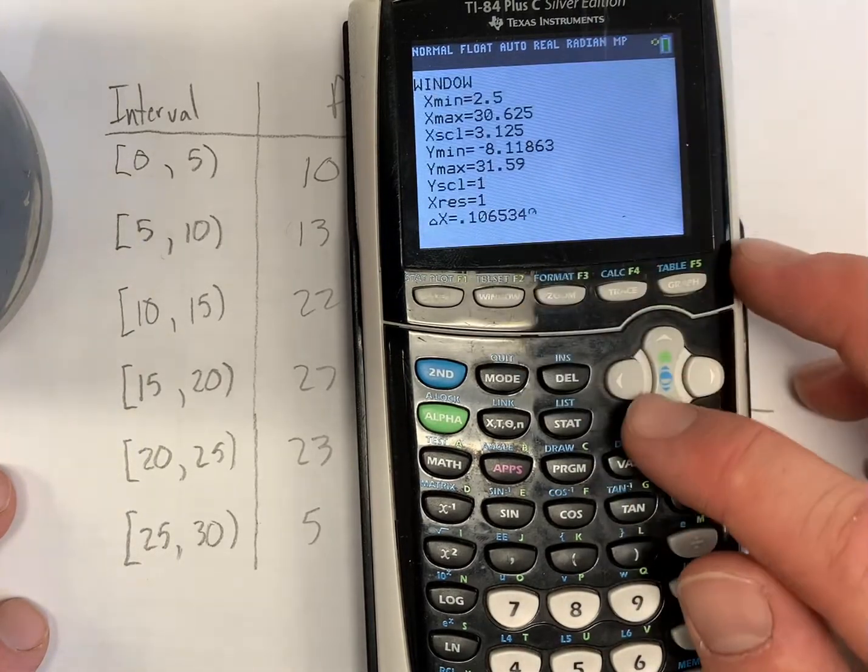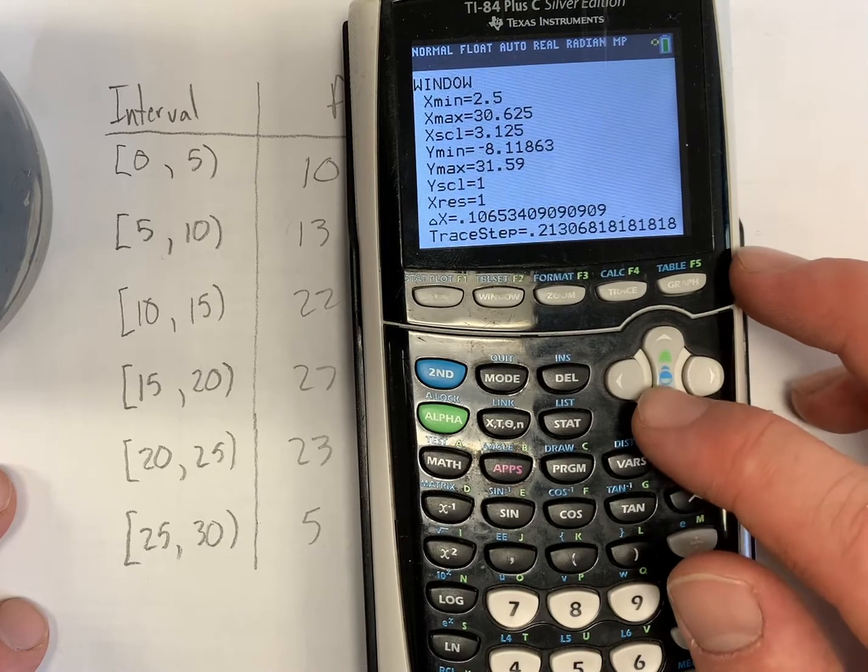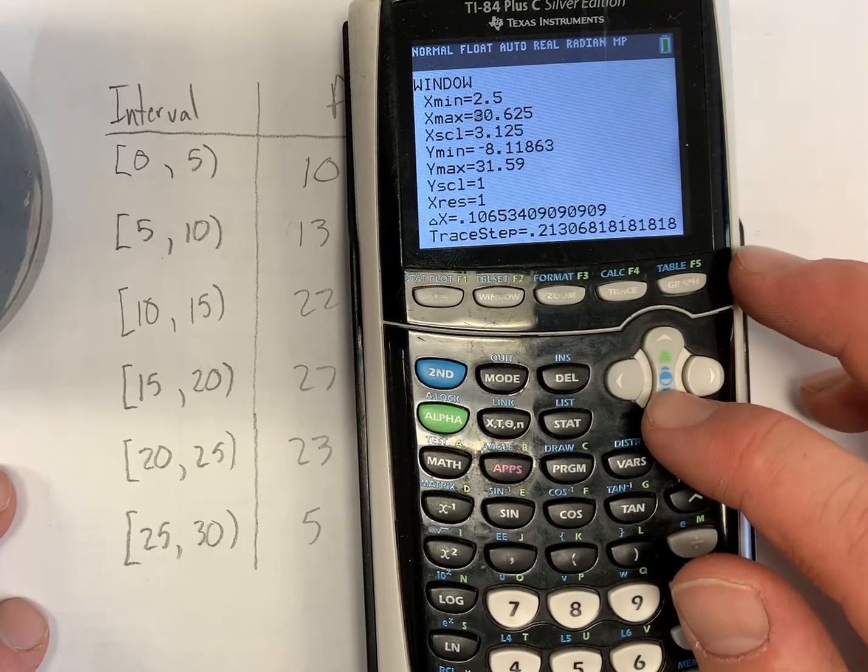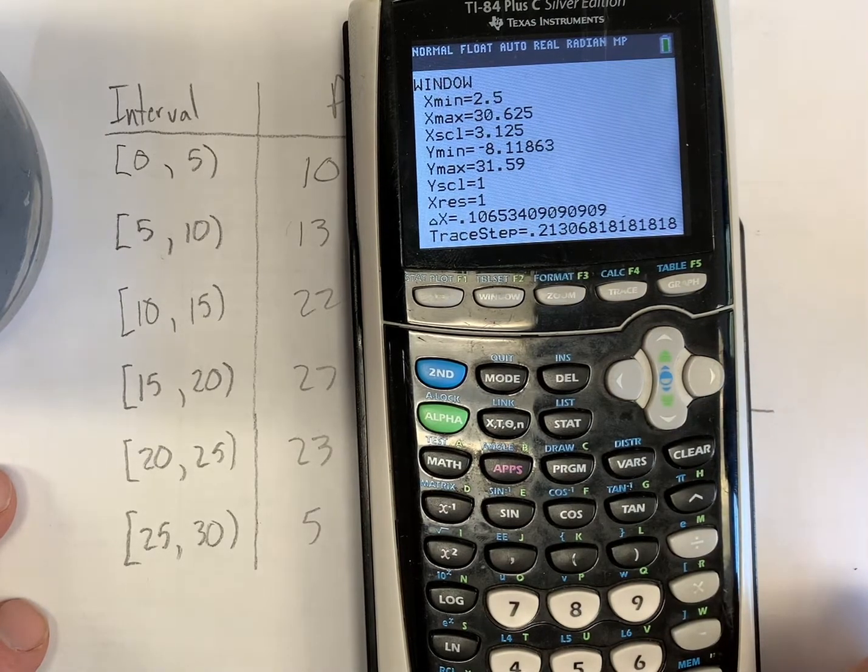So if we go and check our window, it's an issue with our x scale. So our x scale and our x minimum and our x maximum don't line up. So if we were to change those so that they did line up, so we go from 2.5 to 32.5 and our x scale being 5, that should actually make the graph look a little bit better.